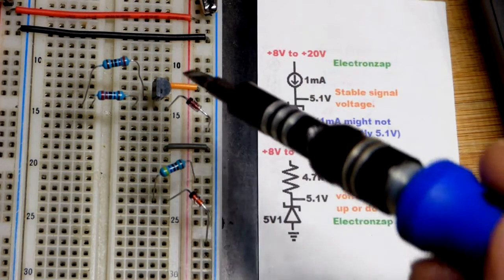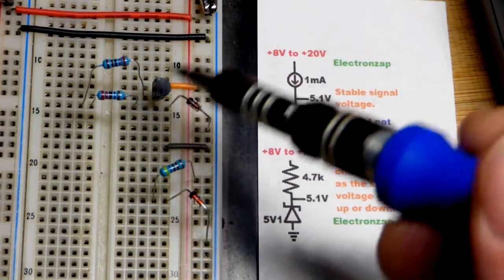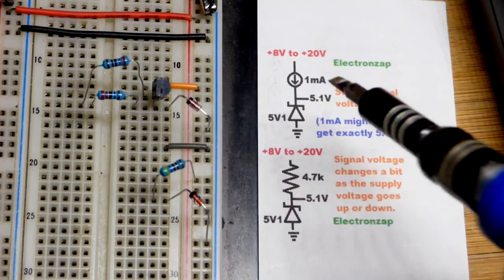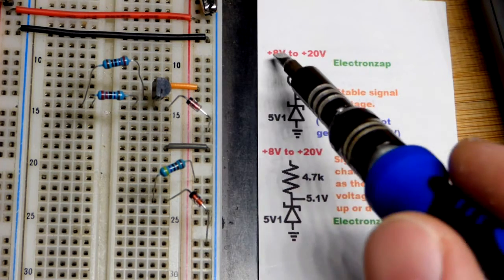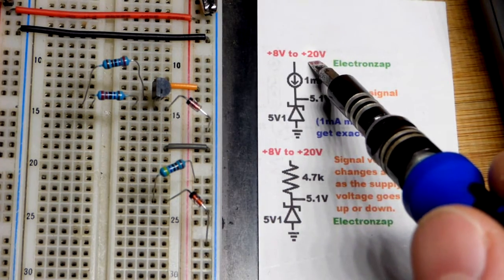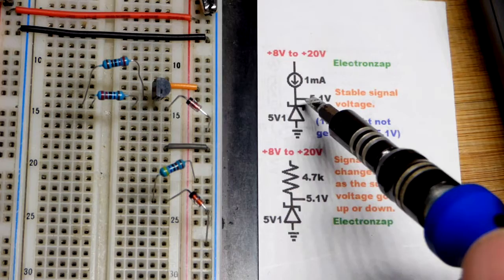But if you take a current source such as we wired here, I wired this up in a recent video to pass one milliamp of current, pretty much no matter what the supply voltage is, as long as it doesn't drop too low.